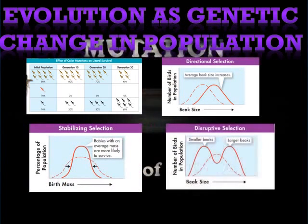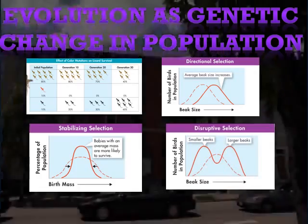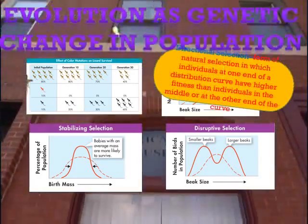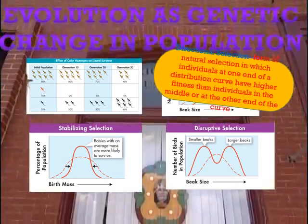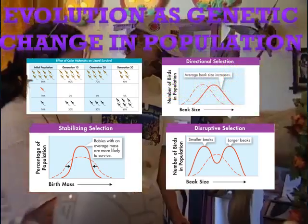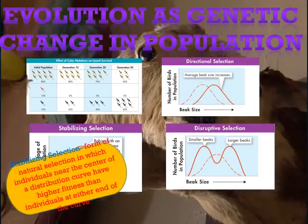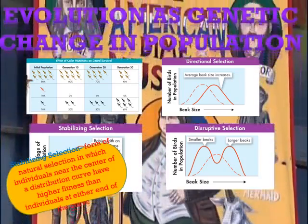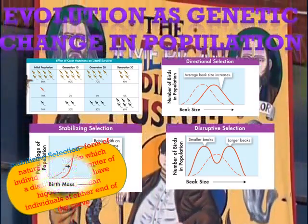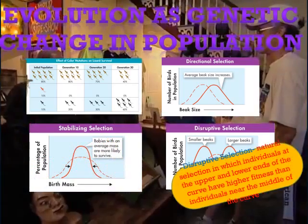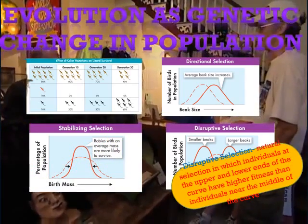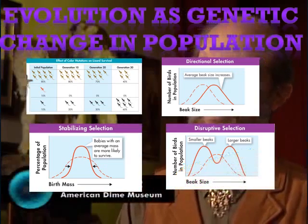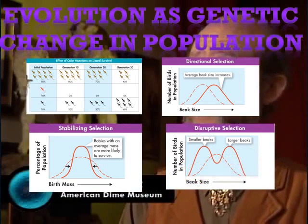When individuals at one end of the curve have higher fitness than individuals in the middle or at the other end, directional selection occurs. When individuals near the center of the curve have higher fitness than individuals at either end, stabilizing selection takes place. When individuals at the outer ends of the curve have higher fitness than individuals near the middle, disruptive selection occurs.